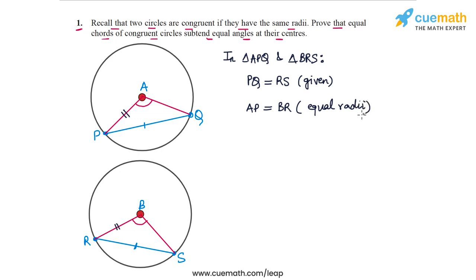And similarly, we should have AQ equal to BS, equal radii again. So AQ is equal to BS.